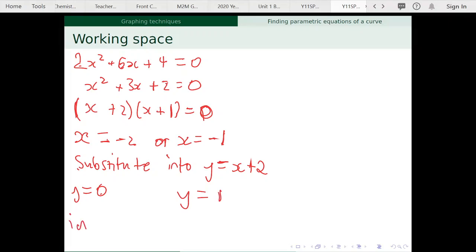So the intersections are at negative 2 comma 0 and minus 1 comma 1.